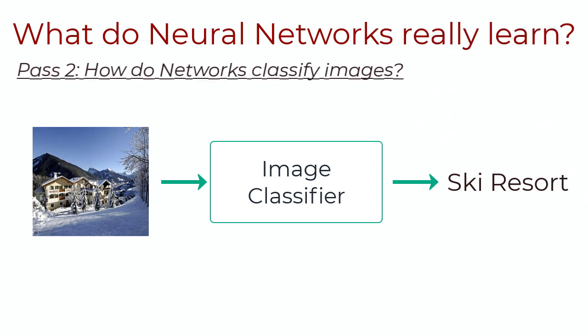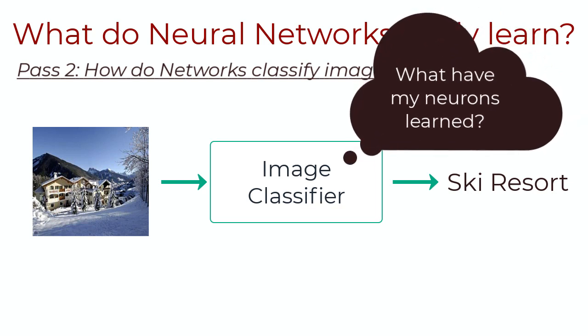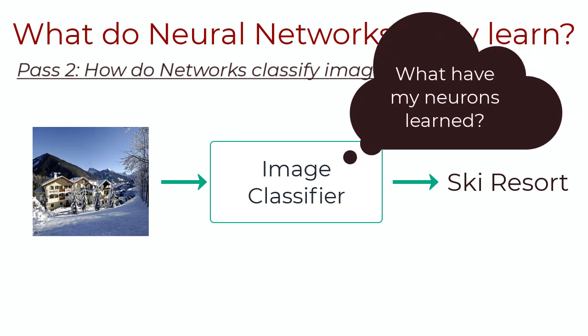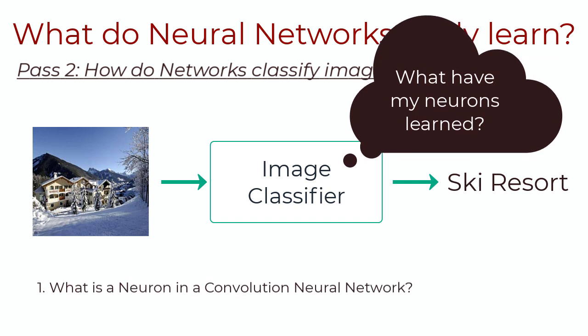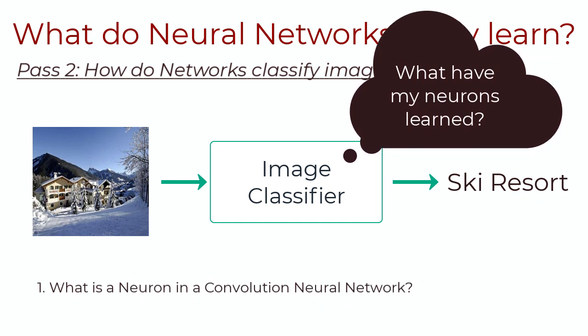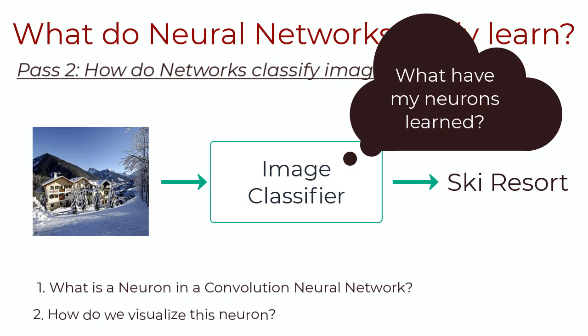So, let's visualize what the neurons have learned when we train them to classify ski resorts. To do this, we need to answer two questions. First of all, what is a neuron in the context of a convolutional neural network? And second, how do we visualize that neuron?